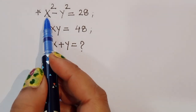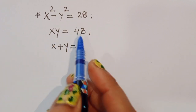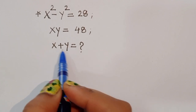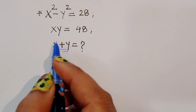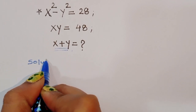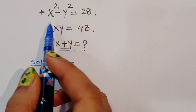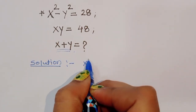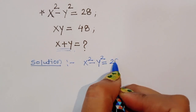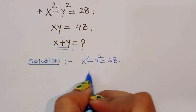The question is: given x squared minus y squared is equal to 28 and xy is equal to 48, we have to find out the value of x plus y. So let's see the solution. First, what is given: x squared minus y squared is equal to 28 and xy is equal to 48.